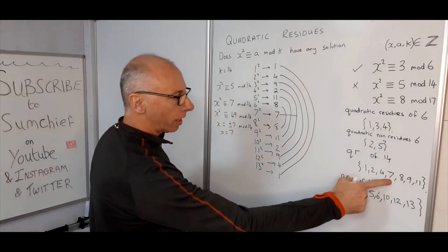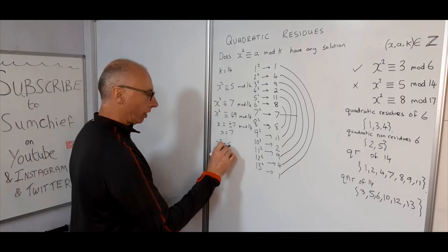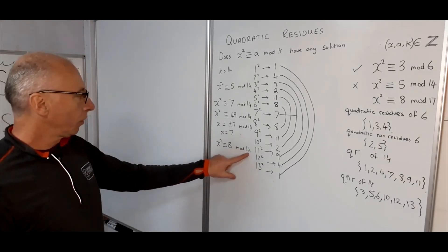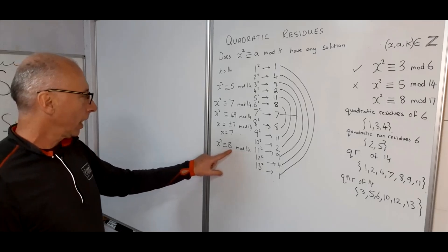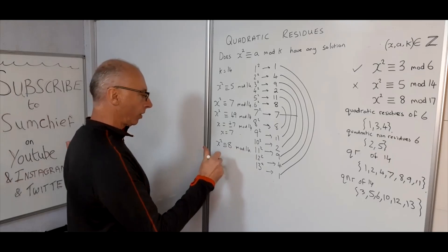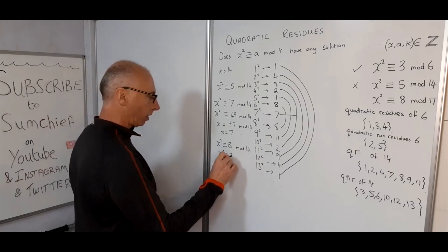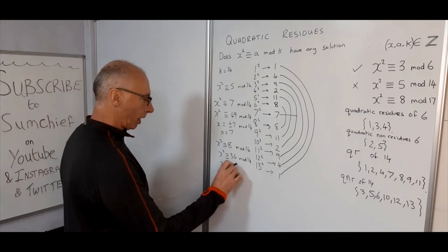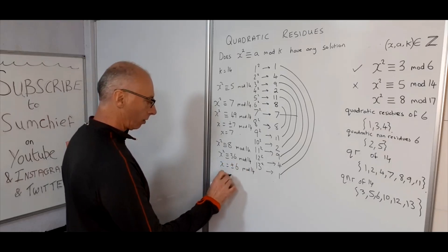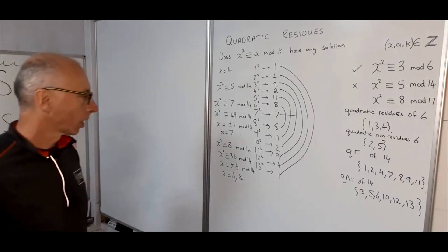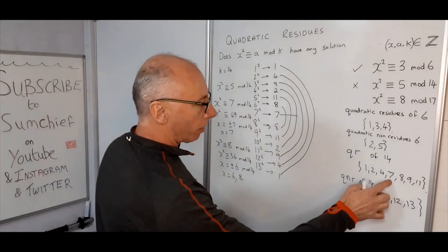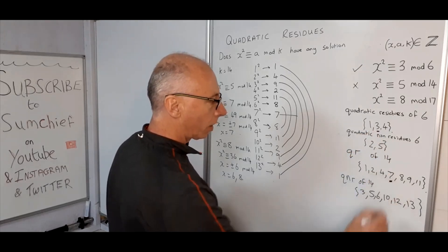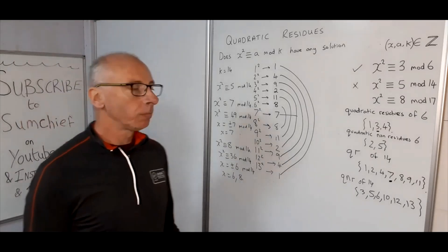For x² ≡ 8 (mod 14): adding multiples of 14 to 8, we find 2×14 = 28 plus 8 = 36. So x² ≡ 36 (mod 14), meaning x = ±6 (mod 14), therefore x = 6 or x = 8. So the centre value (7) and the centre value of mod 6 (3) each give one solution; the rest give two solutions.